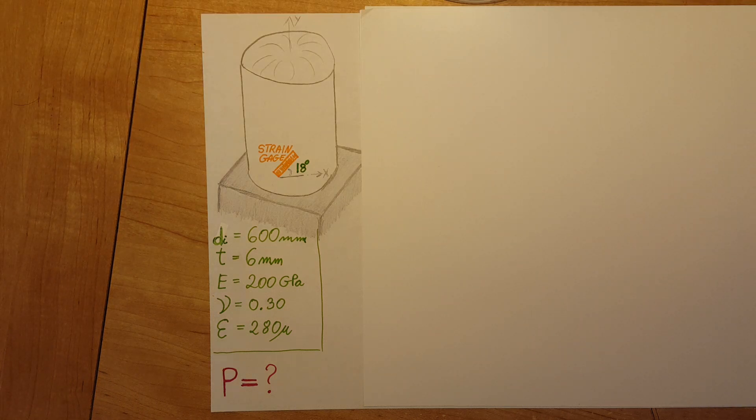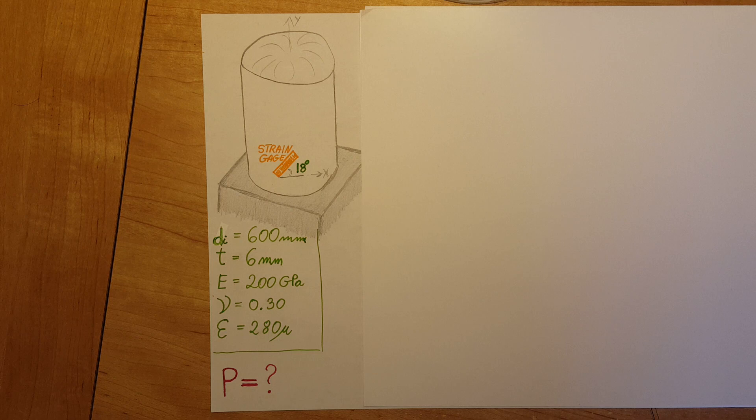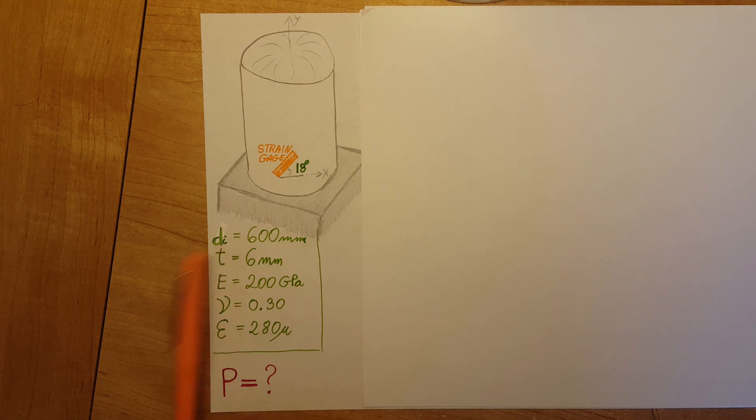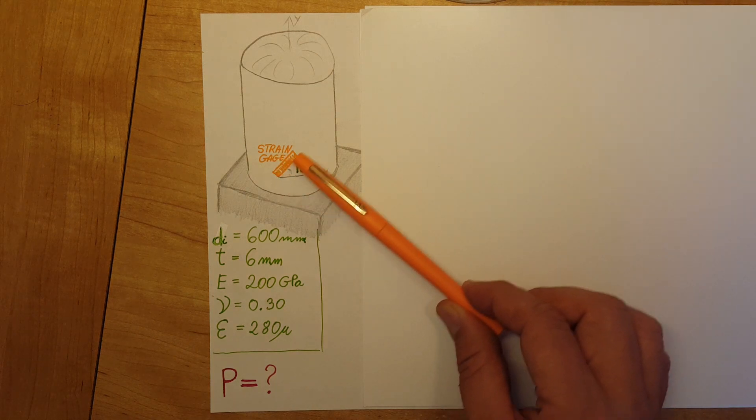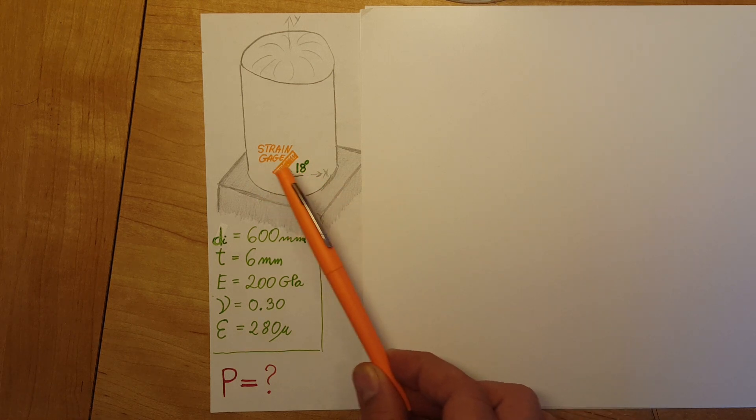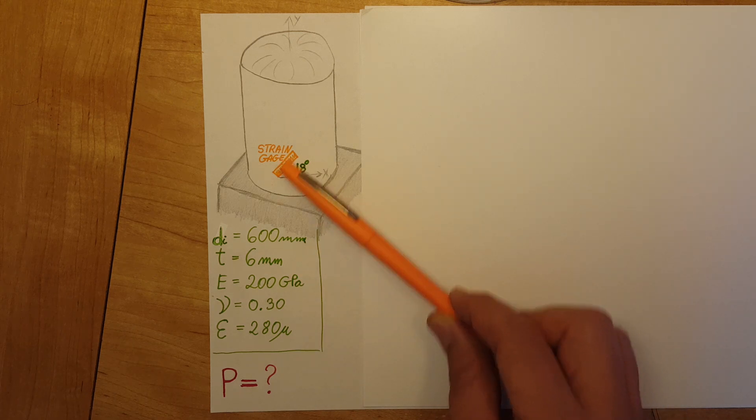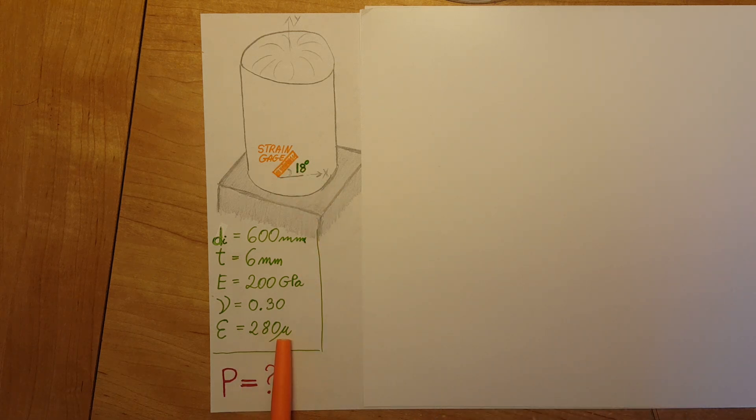Okay, this is a strength of materials problem where we're dealing with a steel tank, which is a thin-walled pressure vessel. We know its inside diameter, thickness, E, and nu. We have a strain gauge placed on its side which forms an 18-degree angle with the horizontal. This strain gauge is giving us a reading of 280 microns, and we need to calculate the pressure inside this pressure vessel.